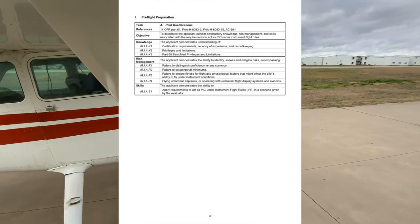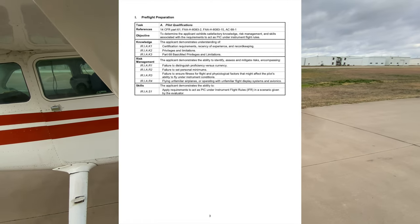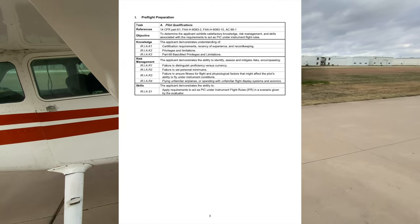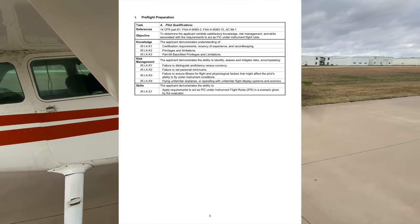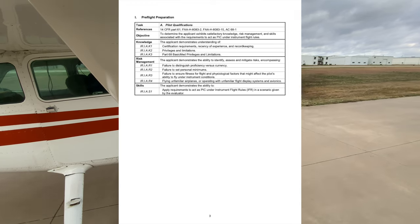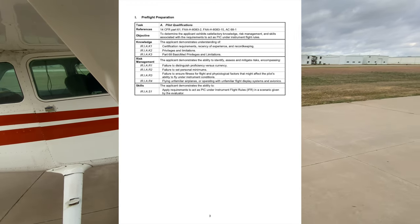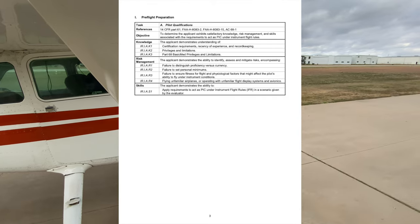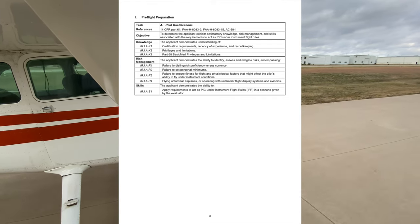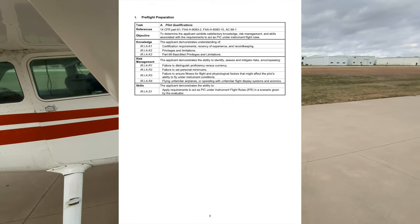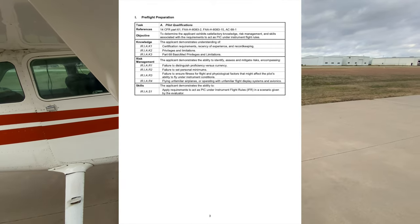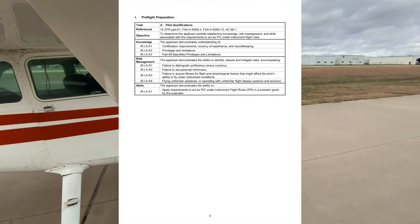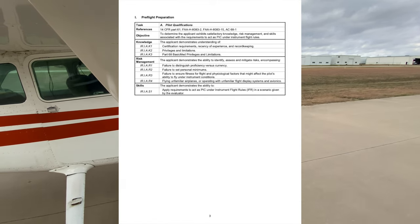If you go past six months, you can fly with a safety pilot to become current again. If you go past 12 months, you must have an IPC — an instrument proficiency check — with a CFII or a DPE, or anyone approved by the FAA. If you're using a simulator for recency, a CFII must be present with you.